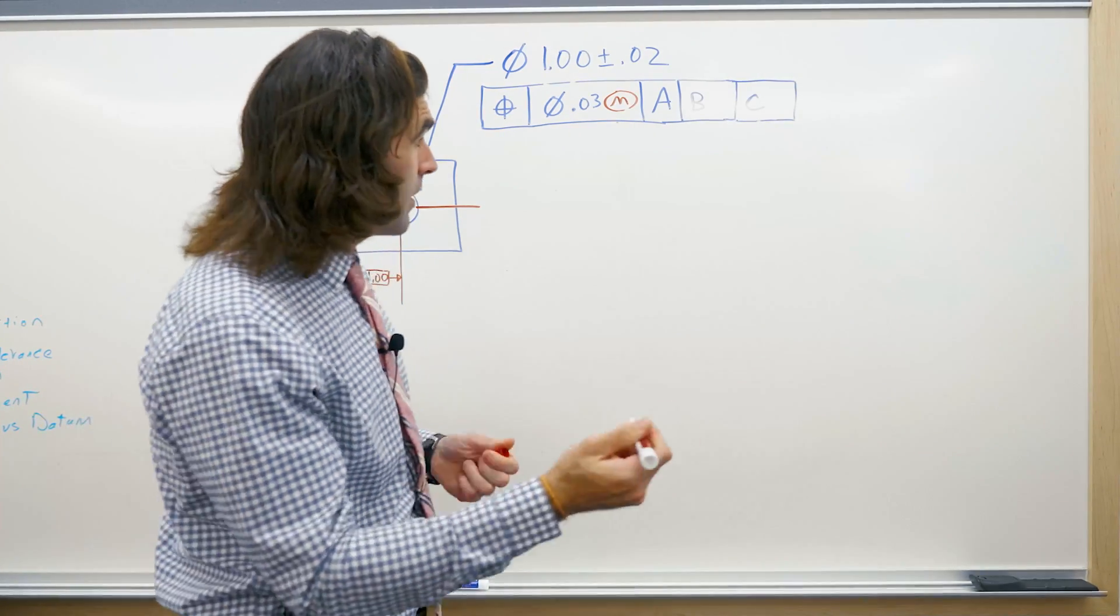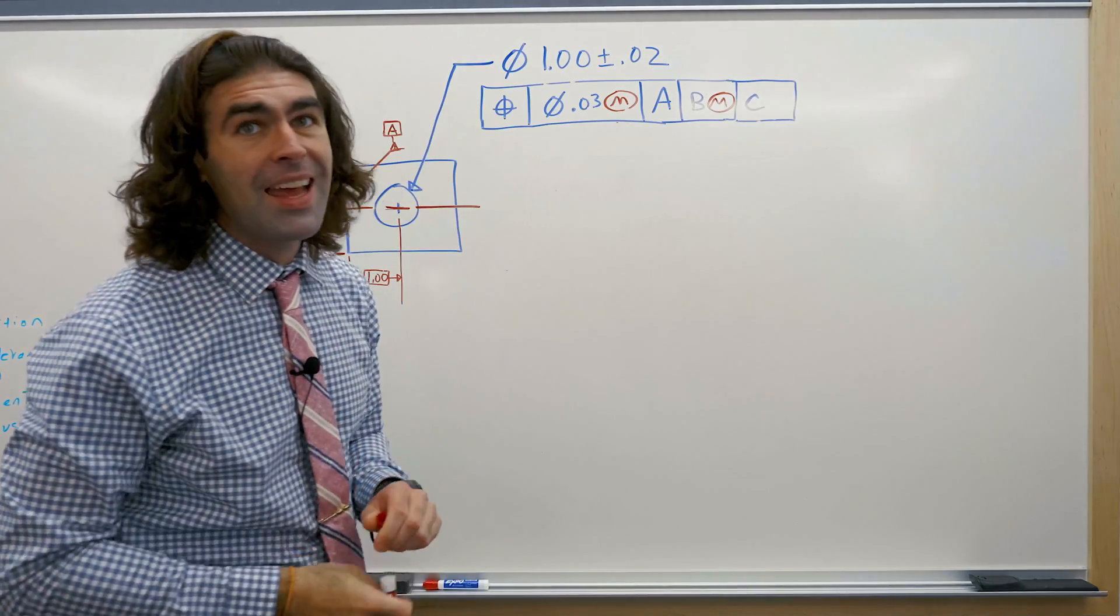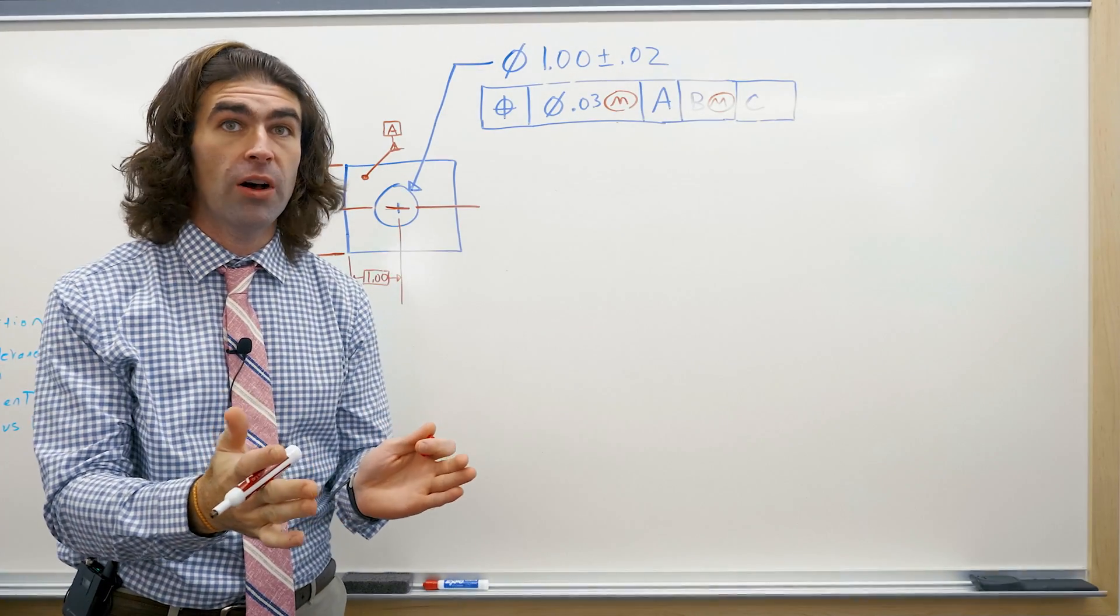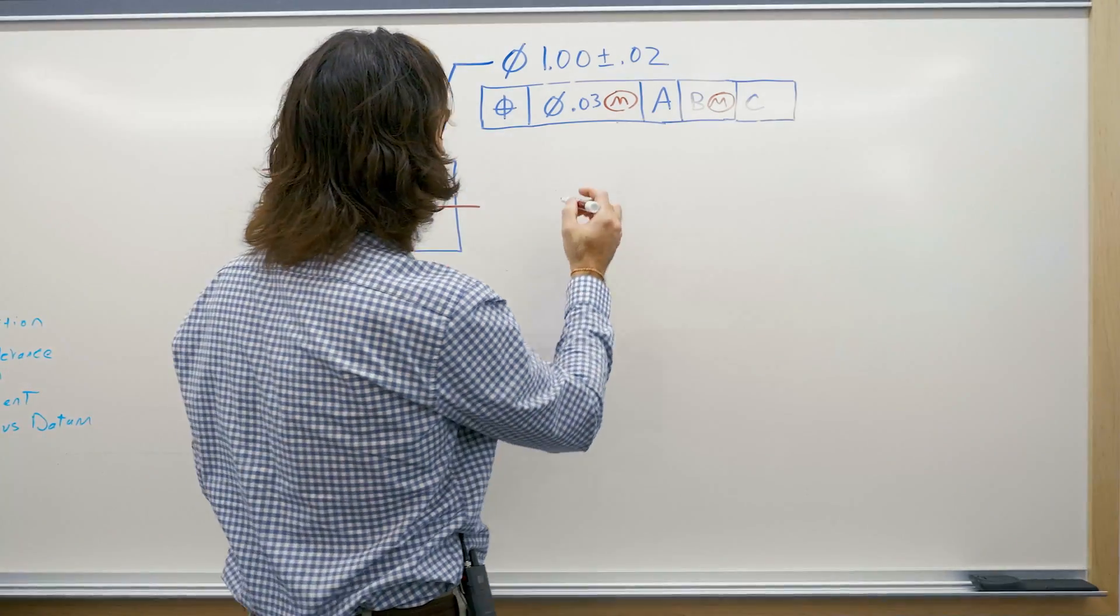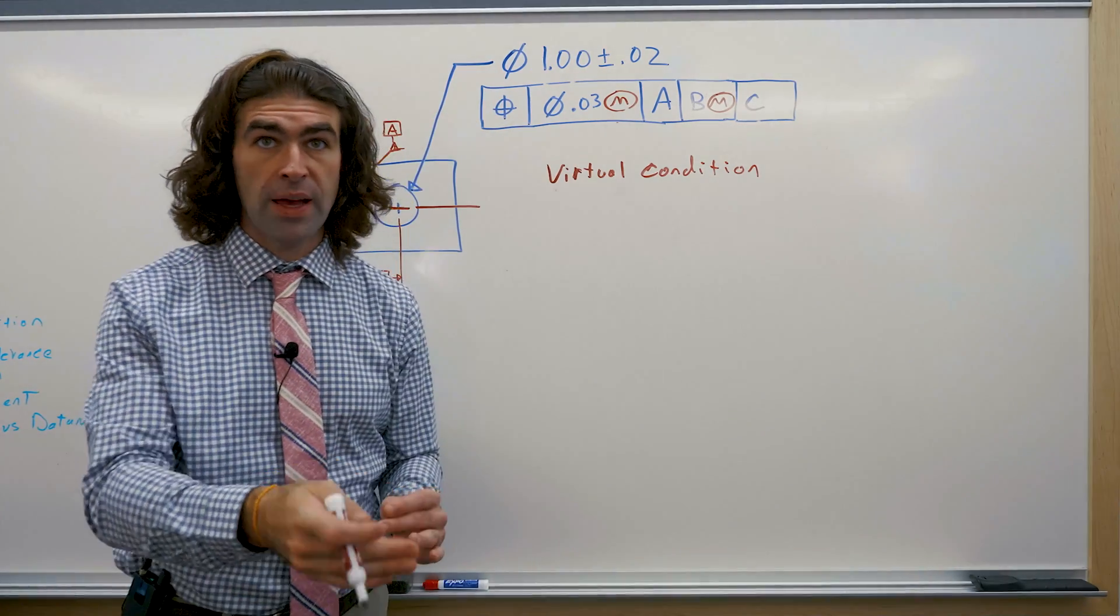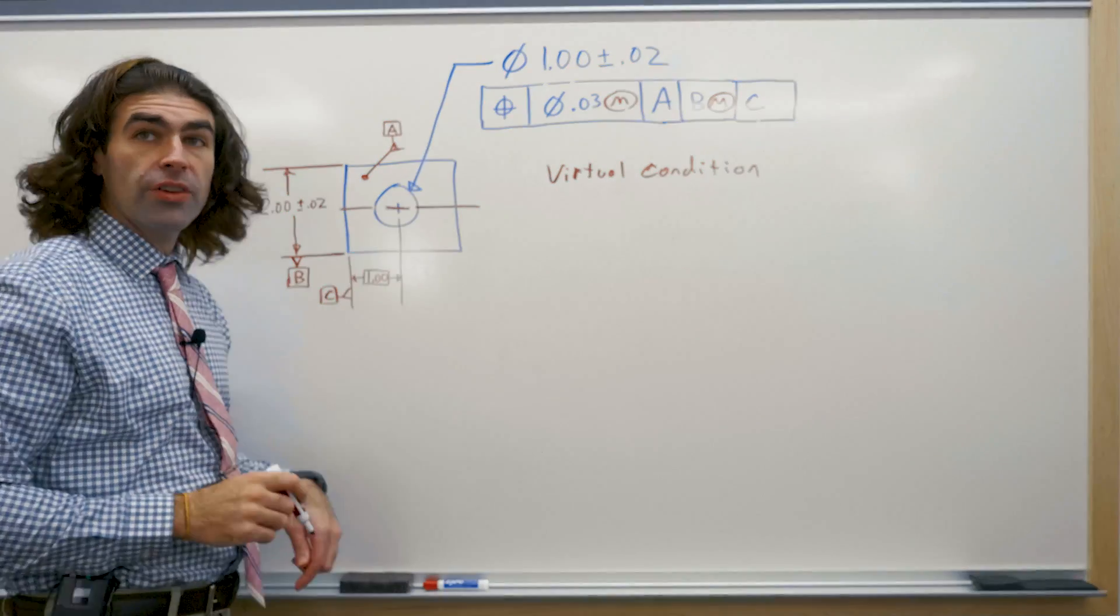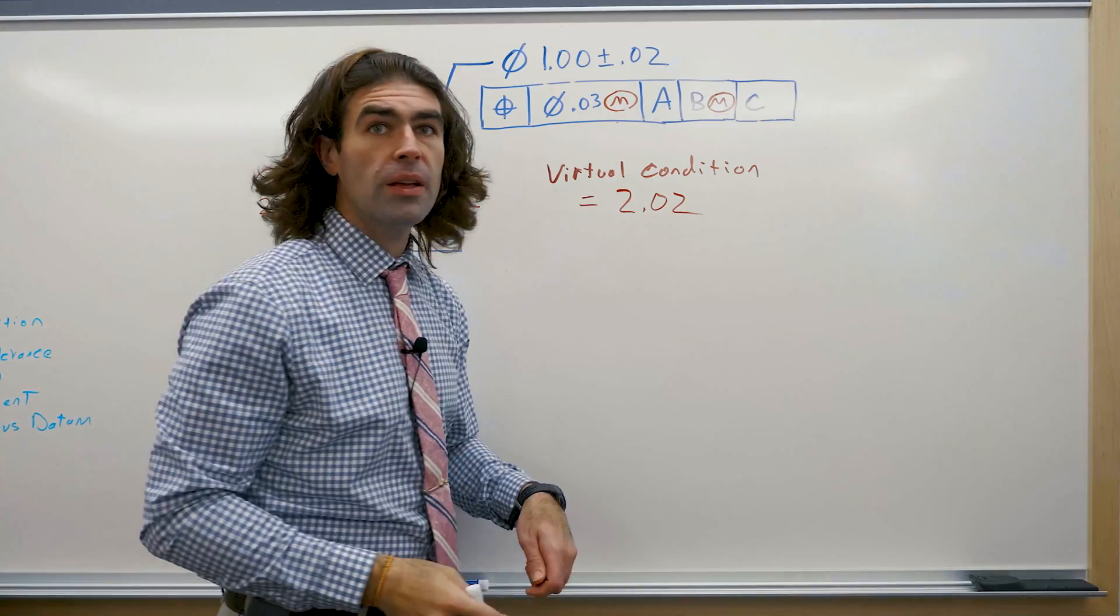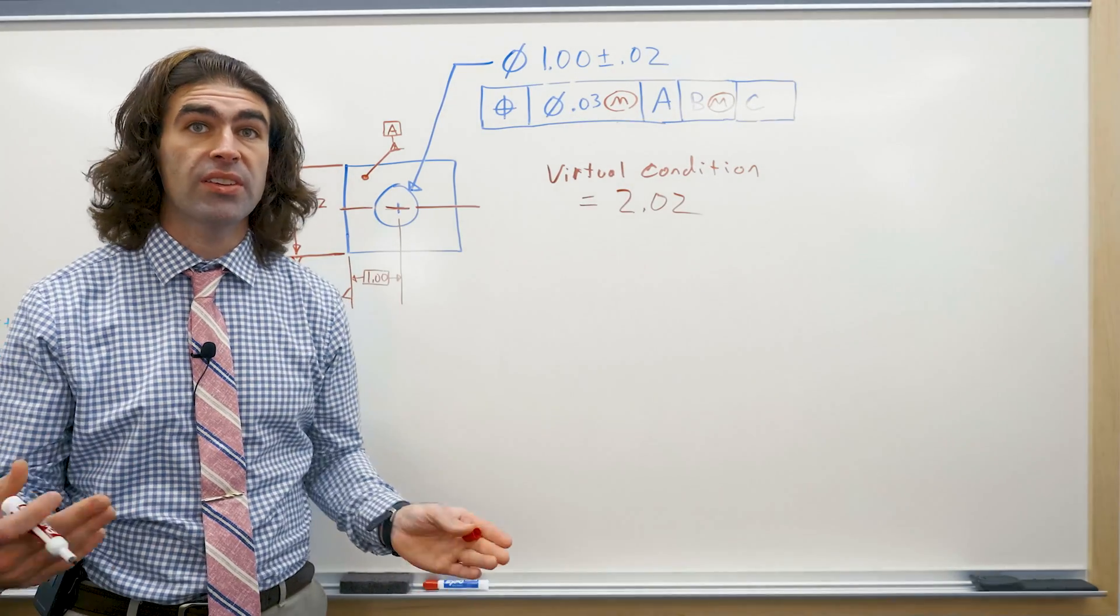Now what the MMC does, it says hey don't worry about those perfectly parallel collapsing jaws. It's saying you can simulate this at the virtual condition of that feature. Now the virtual condition of two inches plus or minus twenty thousands in this case is 2.02. So the most room that feature could take up.